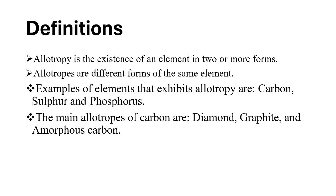We have to talk about the two main terms in this topic. We have the term allotropy and another term called allotropes. The term allotropy is the existence of an element in two or more forms. This means there are some elements that can be in different forms. Allotropes are different forms of the same element, or we can say, different forms that can be formed in an element.